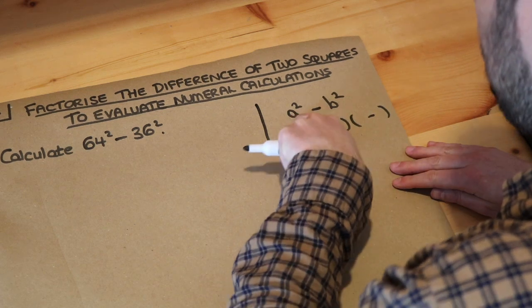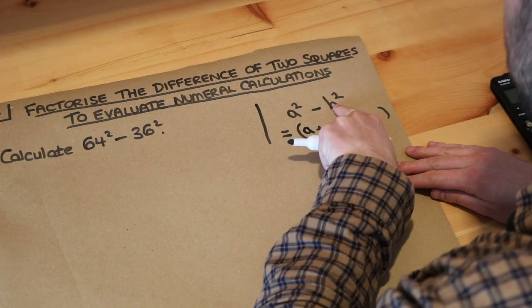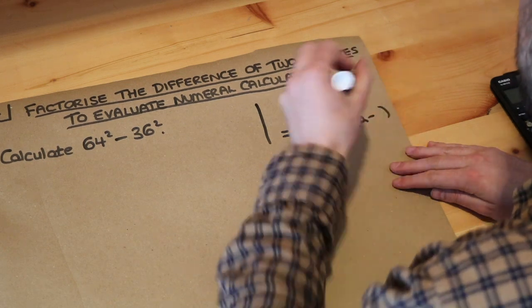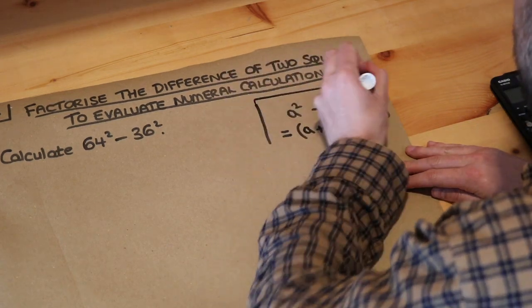Then you do the square root of the first thing. The square root of a squared is just a, so you put a as the first thing. You square root the second thing. The square root of b squared is b, and you have b here and here. That was the difference of two squares.